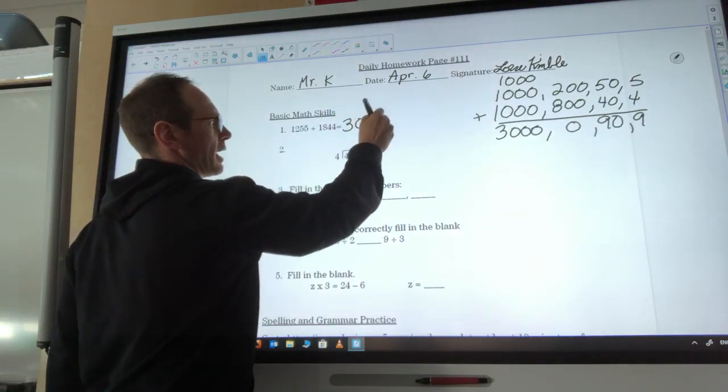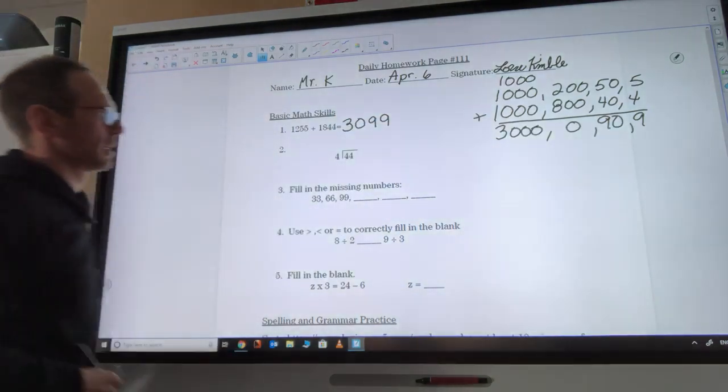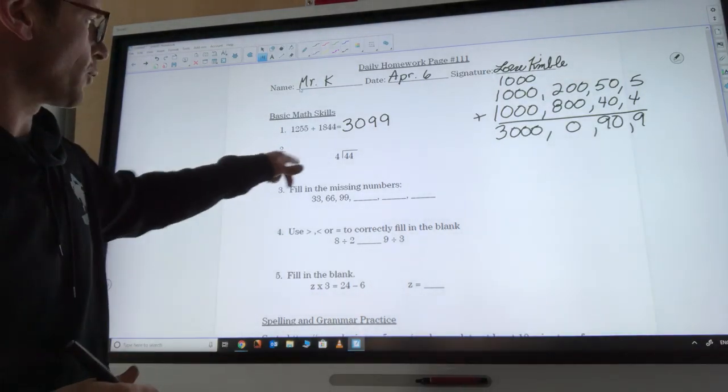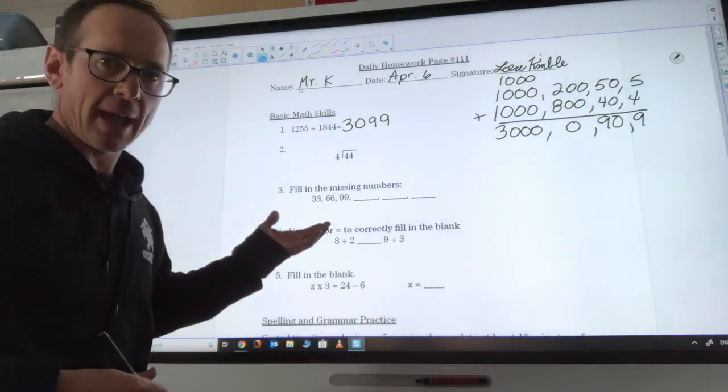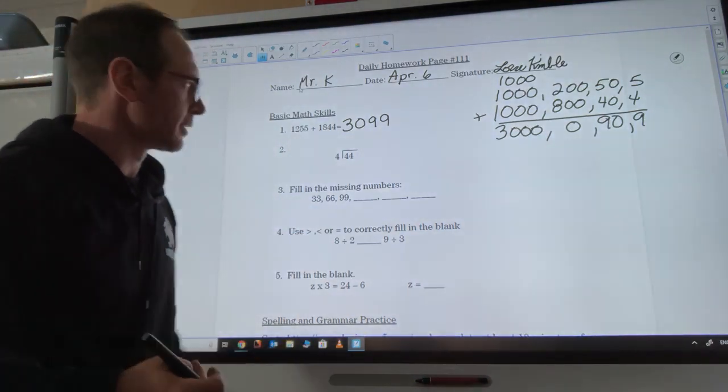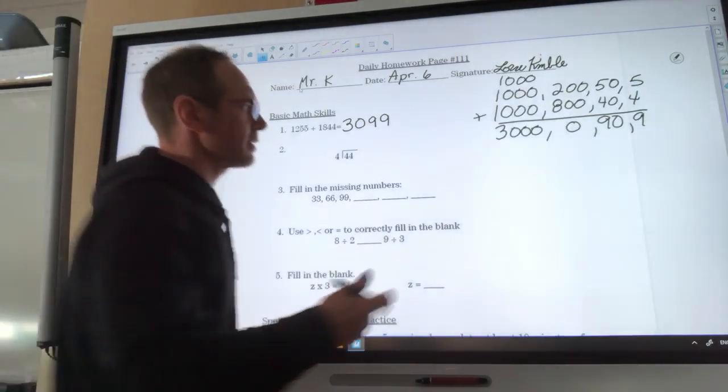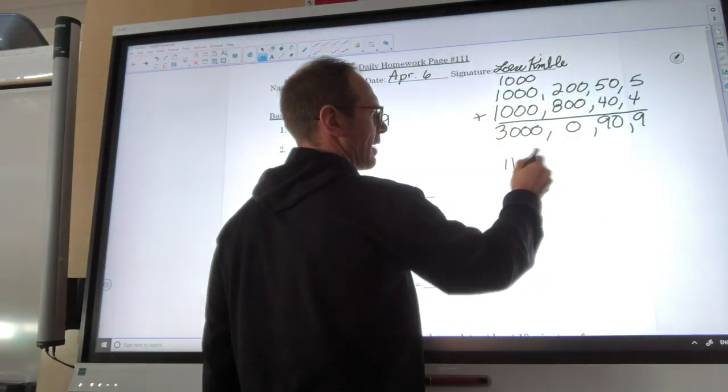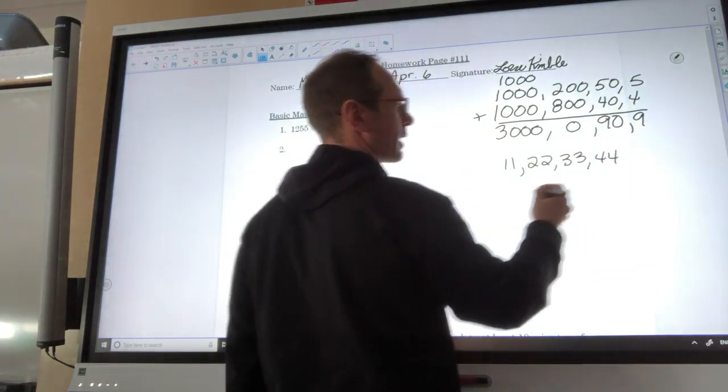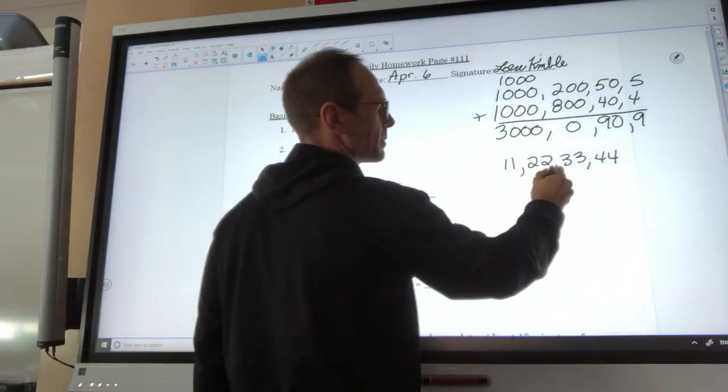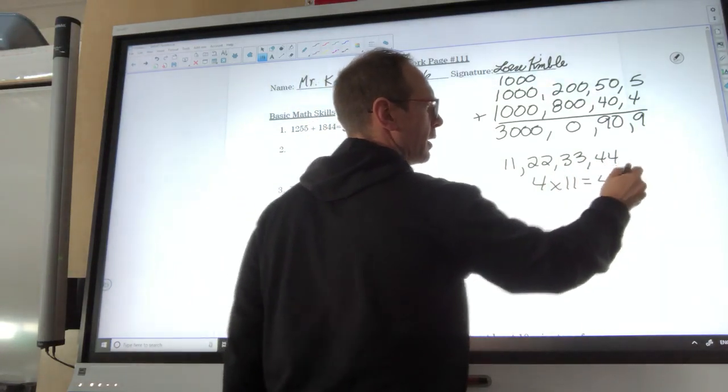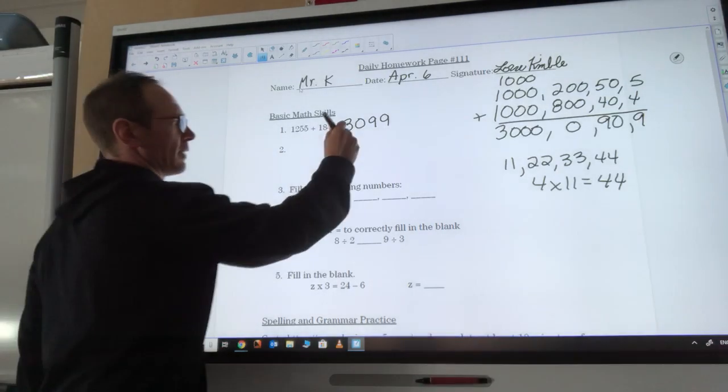That zero in the hundreds place is really important to have on there. Alright, now we have 44 divided by 4. You might remember we've been looking at ones like this. And if you remember the elevens, when we were doing our elevens, we know that elevens is 11, 22, 33, 44. Oh, look at that. If I know 4 times 11 is 44, then I know 44 divided by 4 is 11.